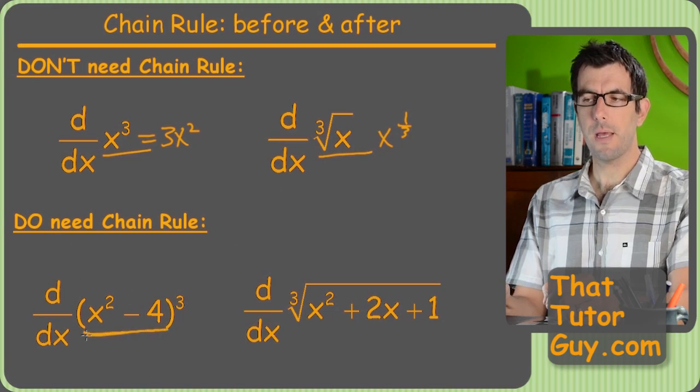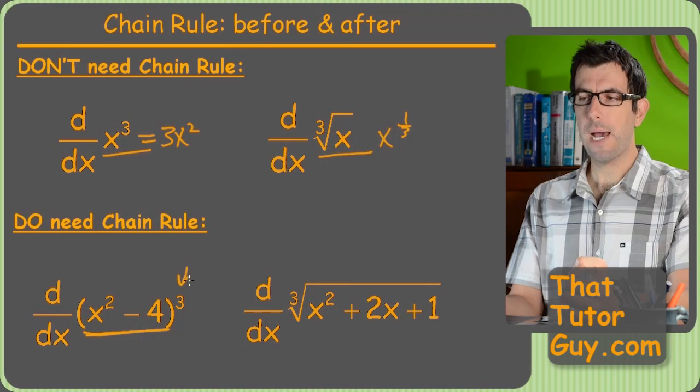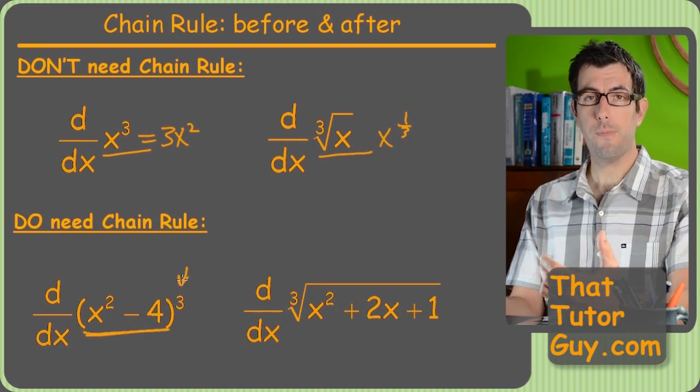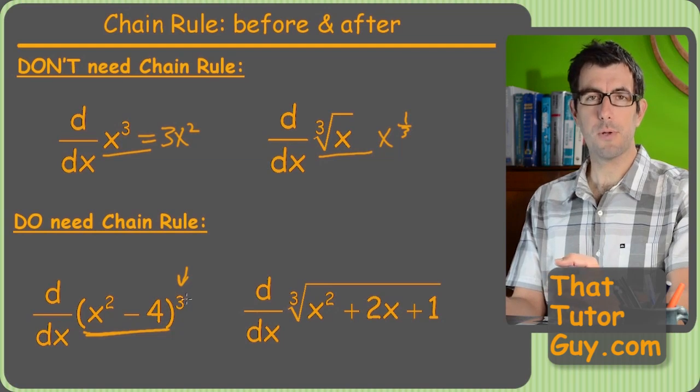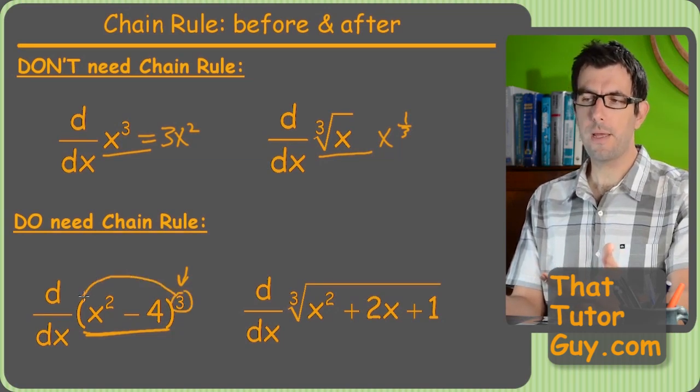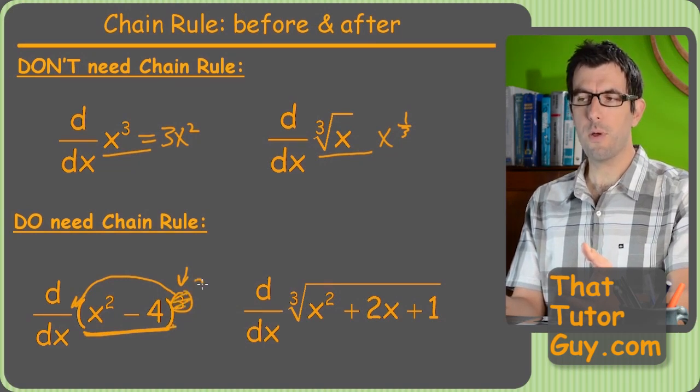We do need the chain rule for this problem. Because here we've got something, a bunch of stuff, in this case a polynomial raised to a power. So we still want to use the power rule. And we'll get into this next video but the derivative of this is still going to be like your typical power situation. You take the old power, put it out front, and then we're going to keep this stuff the way it is. Then we'll have a new exponent that's one less, so it's two.